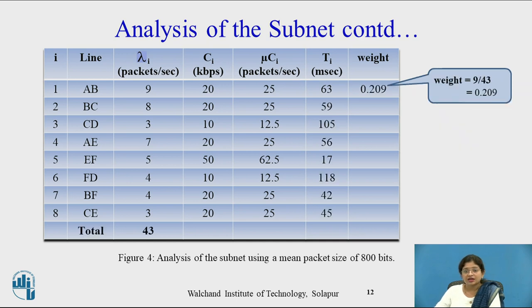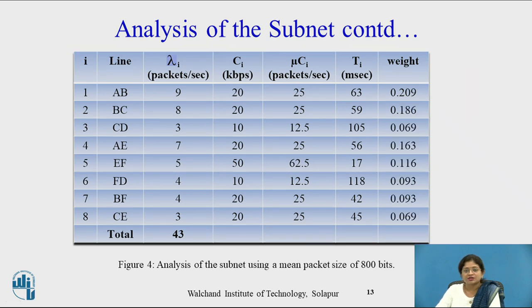Now look at the weight. The weight equals 9 divided by 43, where 43 is the sum of all lambda values across all lines, giving a weight of approximately 0.29. Likewise all weight values are calculated. Looking at the delay times, the maximum delay time is 118 milliseconds on line FD, and the second maximum is 105 milliseconds on line CD. In this way we calculate the delay time on each line.